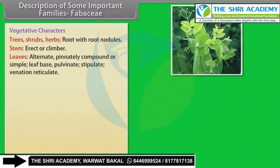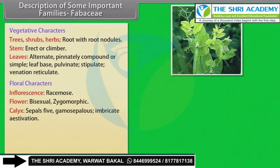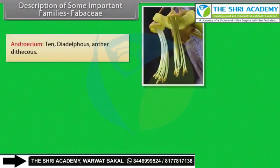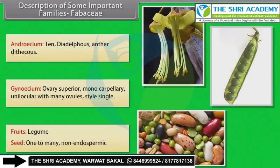Vegetative characters: Trees, shrubs, herbs; root with root nodules; stem erect or climber; leaves alternate, pinnately compound or simple, leaf base pulvinate, stipulate, venation reticulate. Floral characters: Inflorescence racemose; flower bisexual, zygomorphic; calyx — 5 sepals, gamosepalous, imbricate aestivation; corolla — 5 petals, polypetalous, papilionaceous, consisting of a posterior standard, two lateral wings, and two anterior ones forming a keel enclosing stamens and pistil; vexillary aestivation.